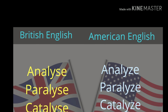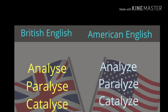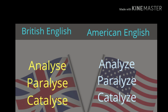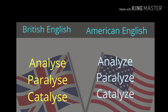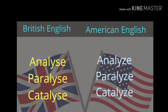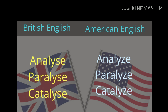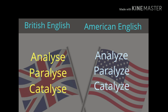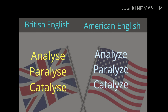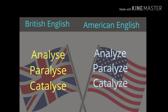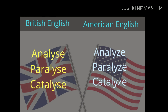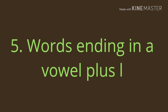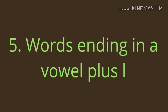Next, let's discuss words ending in Y-S-E versus Y-Z-E. In British English, words like analyse, paralyse, and catalyse are spelled with S-E, while in American English they are spelled with Z-E. So in your exam, you need to spell these words with S-E.